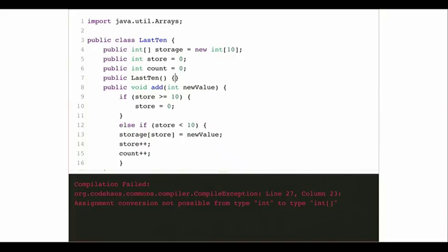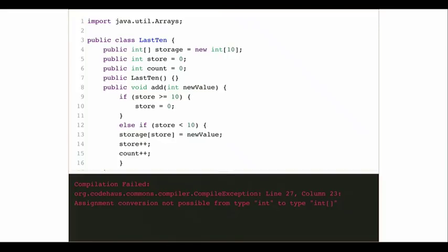Looking further, there are two other pieces of state this solution is maintaining: one called store and one called count, both integers. I'm not exactly sure what both of these are for. In the add method, clearly add has to put the value somewhere in the array so I can retrieve it later. The class is remembering the last 10 integers that were added. I've got my array that stores 10 integers. Now in add, there's some logic where I'm trying to figure out: if I'm at the end of the array, what do I do?